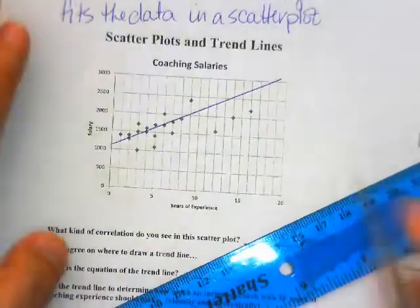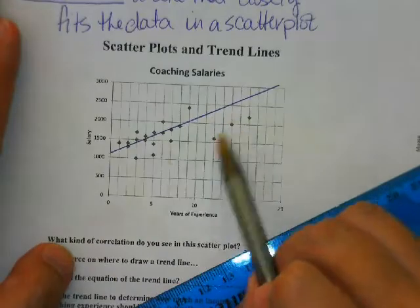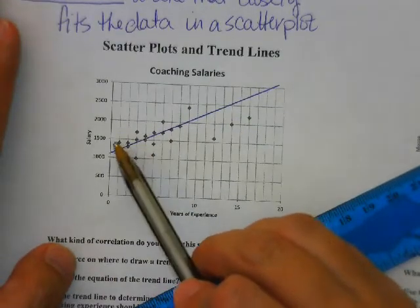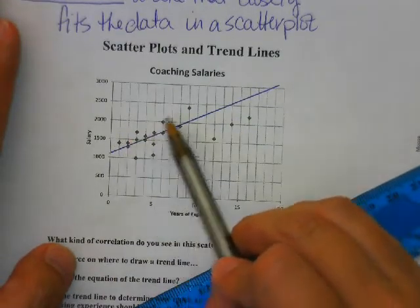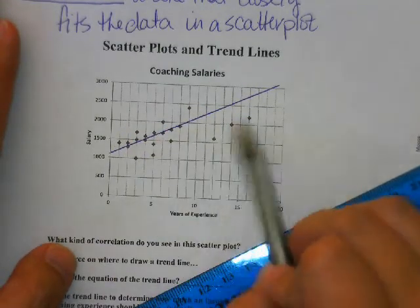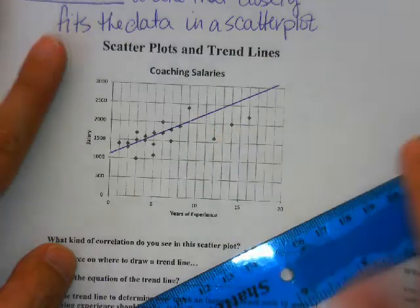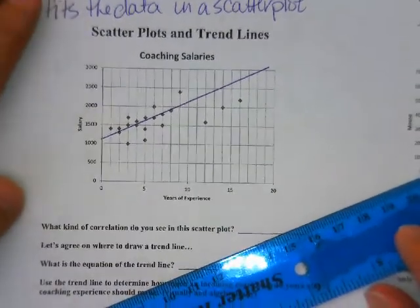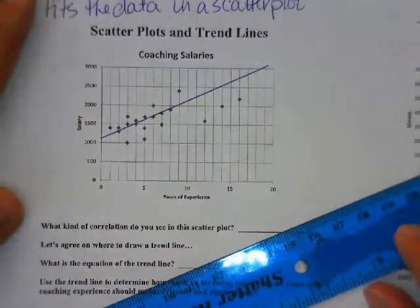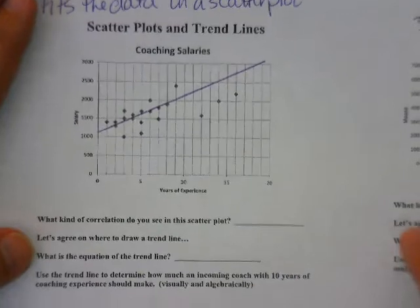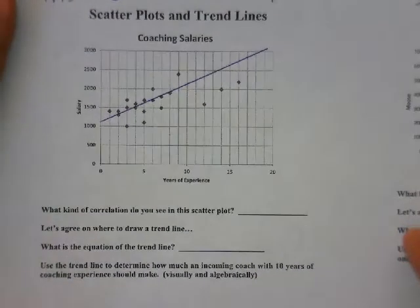I can see I've got 1, 2, 3, 4, 5, 6, 7 points, and I can see 4 pretty far away — these are kind of outliers, but that'll work. It needs to be as close as you possibly can get it.